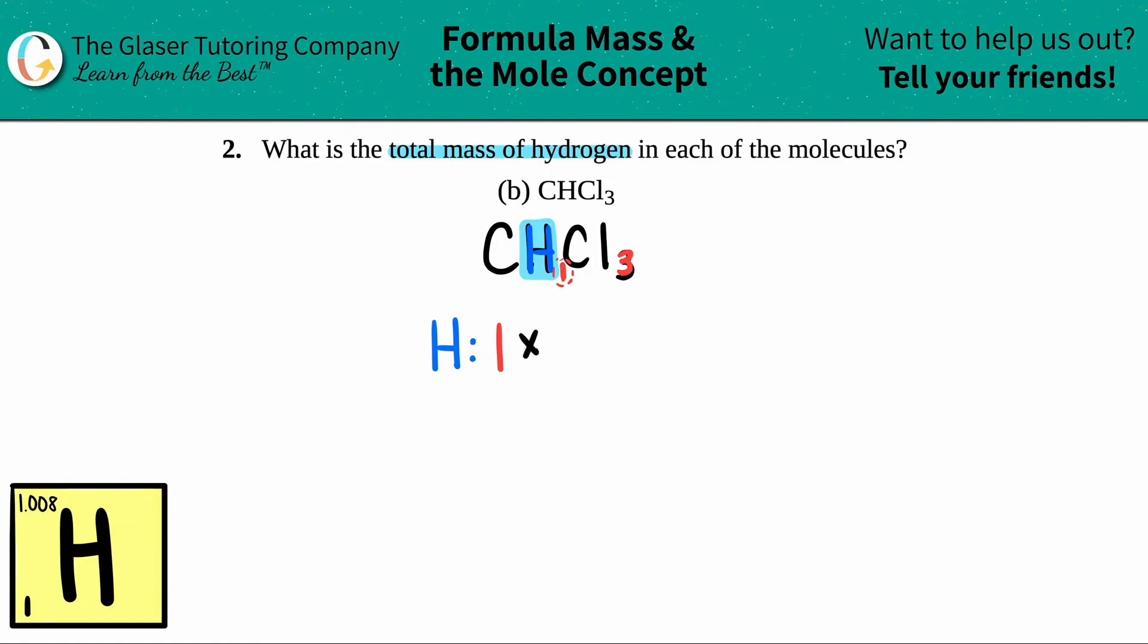Now, all you're going to do is you're just going to multiply that one by the mass found on the periodic table of hydrogen. But usually on the periodic table, they're going to give you two numbers, right? Which one do you multiply it by? Well, there's an atomic number and there's a mass number. The mass number is always the bigger one of the two numbers.